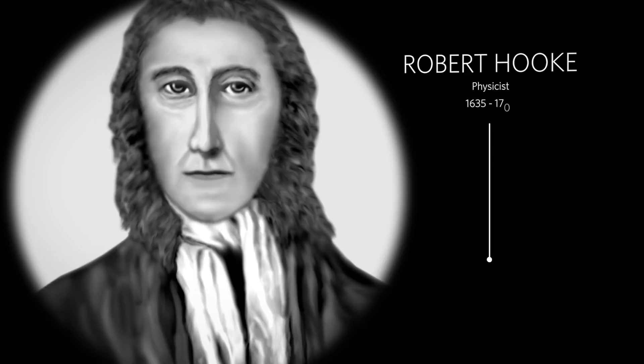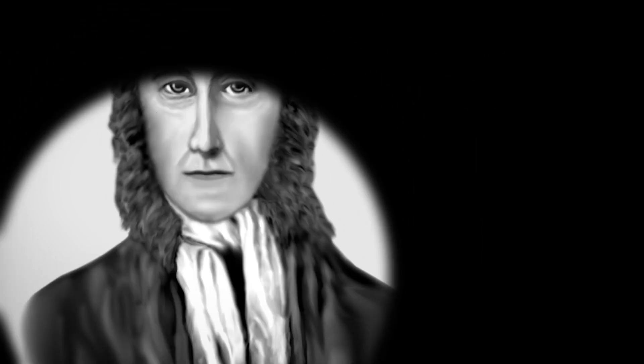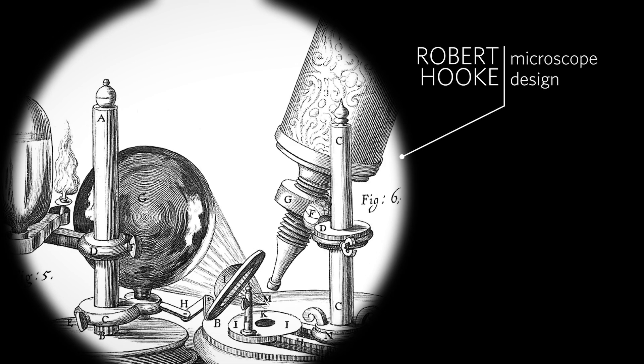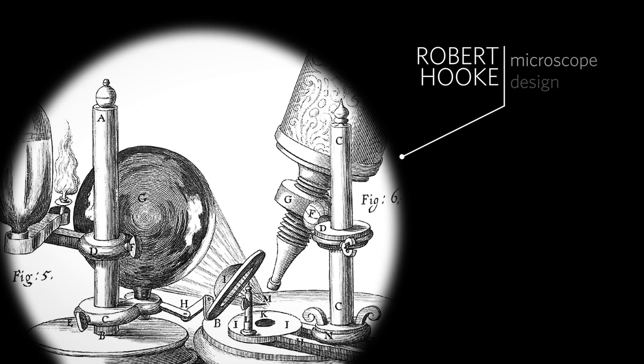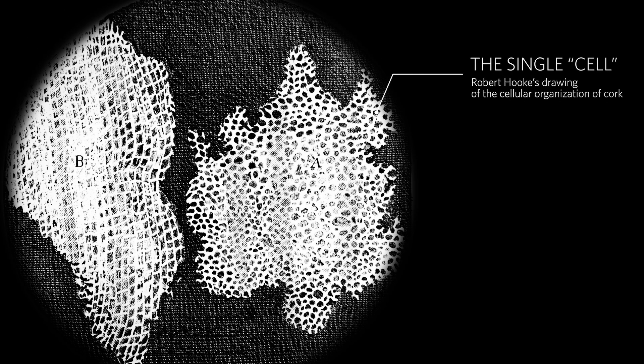Over 350 years ago, Robert Hooke discovered the single cell. He was a physicist who built and used a microscope, which gave him new information to understand life in a new way through a new lens. We're going a level deeper.